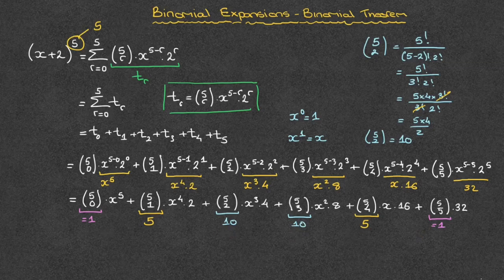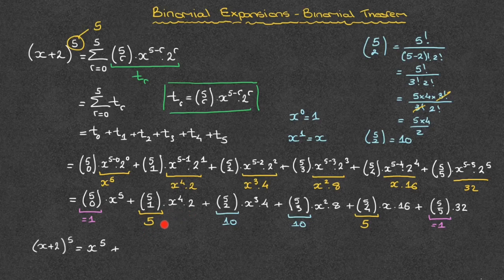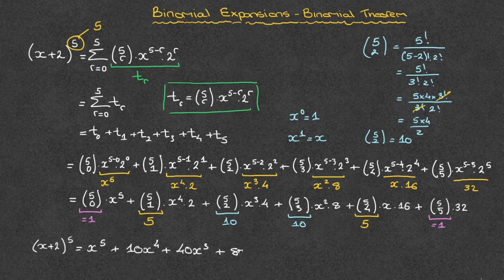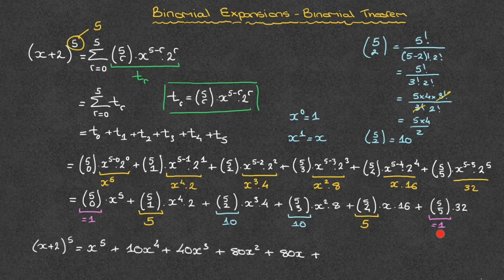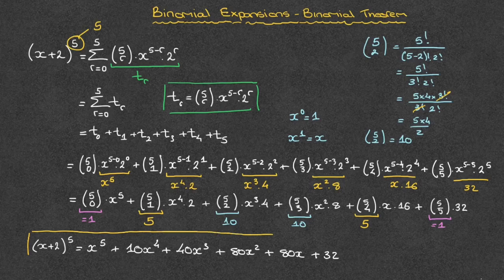Using these values, we can now state the final answer. x plus 2 raised to the power of 5 equals 1 times x to the power of 5, which is just x to the power of 5, plus 5 times x to the power of 4 times 2, which is 10x to the power of 4, plus 10 times x to the power of 3 times 4, which is 40x cubed, plus 10 times x squared times 8, which is 80x squared, plus 5 times x times 16, which is 80x, and finally plus 1 times 32, which is 32. We've just written all of the terms in the expansion of x plus 2 raised to the power of 5 using the binomial expansions formula.